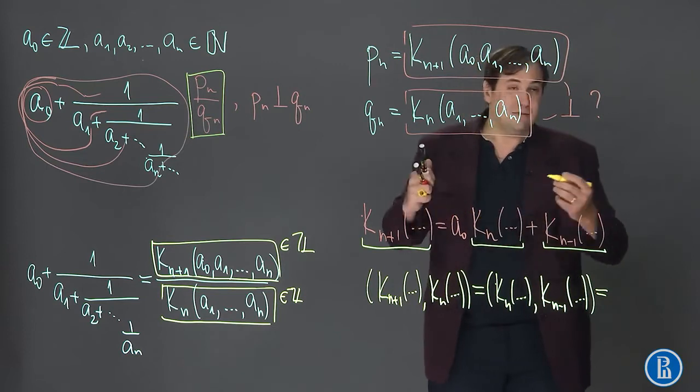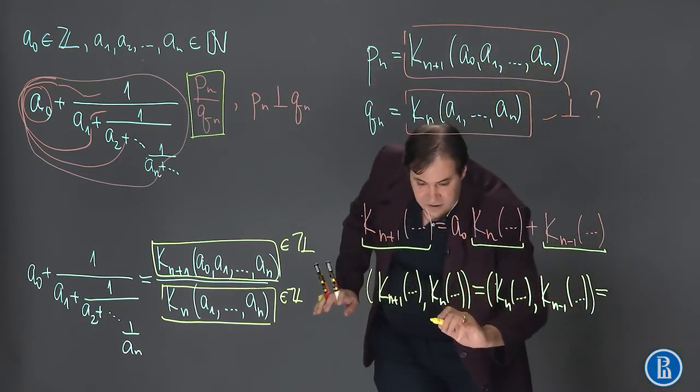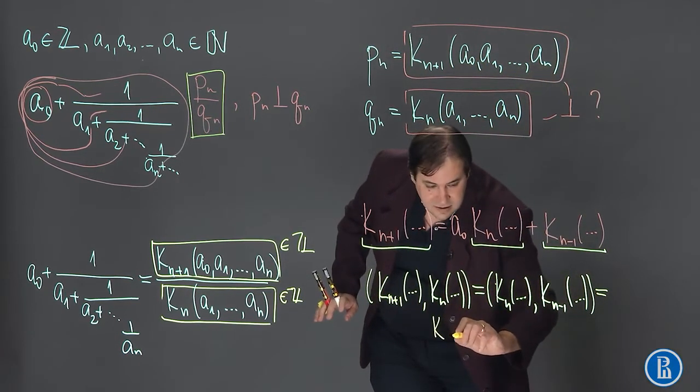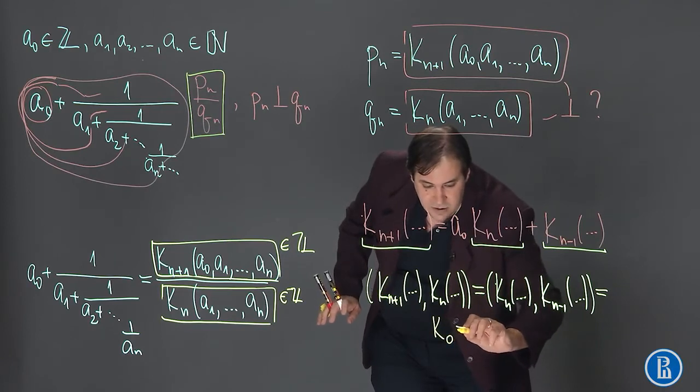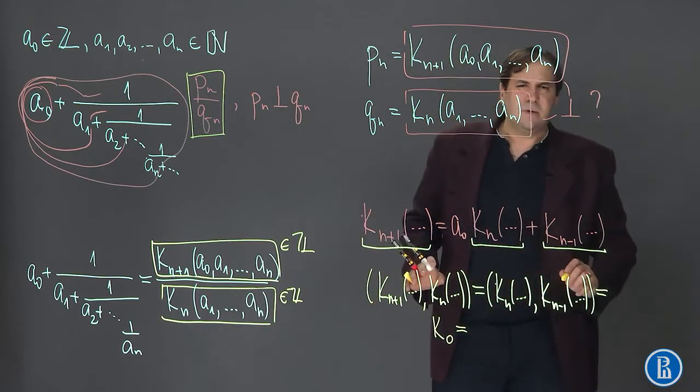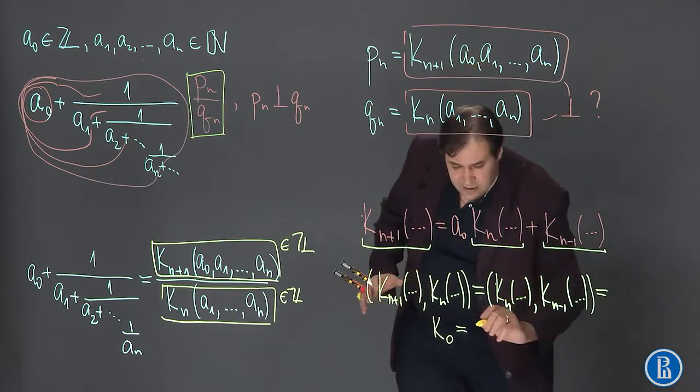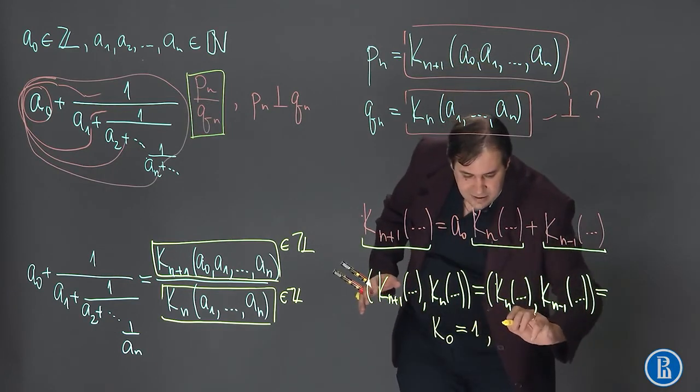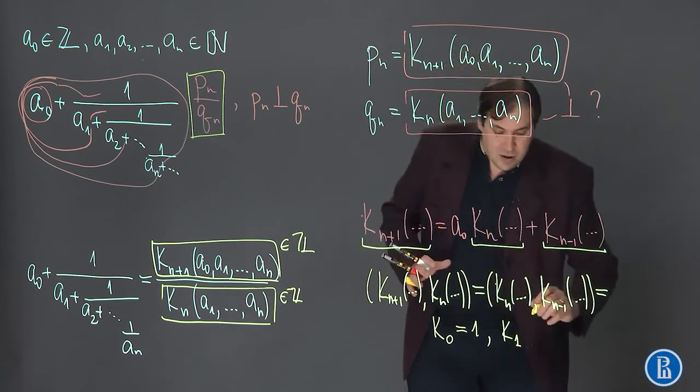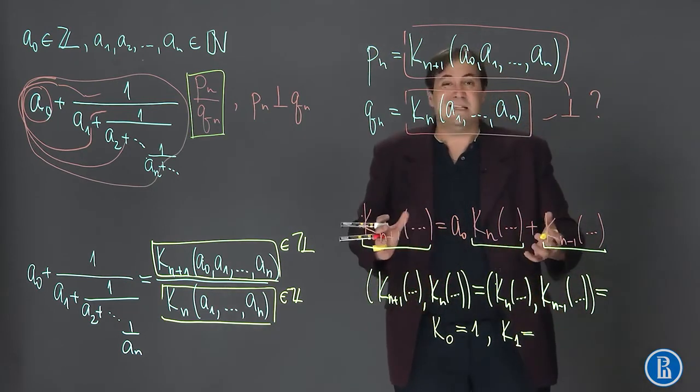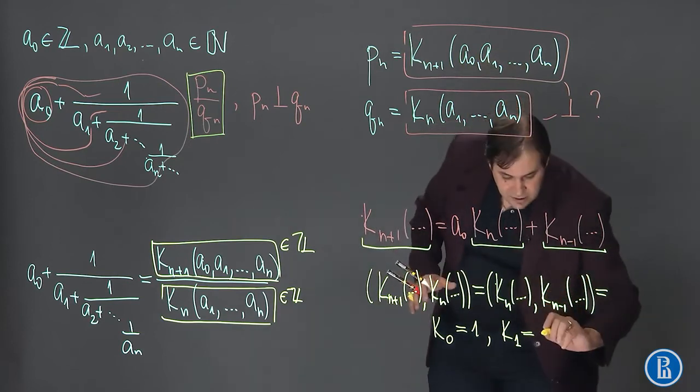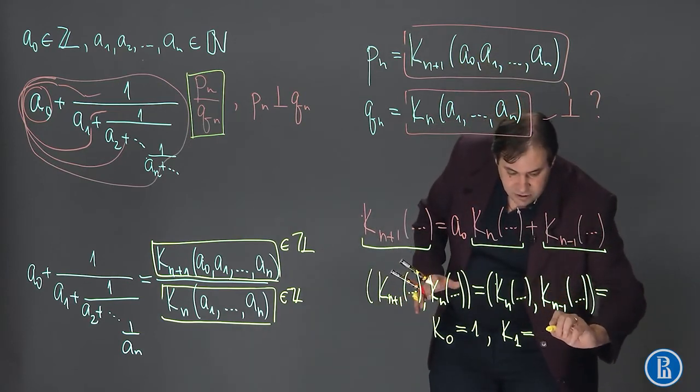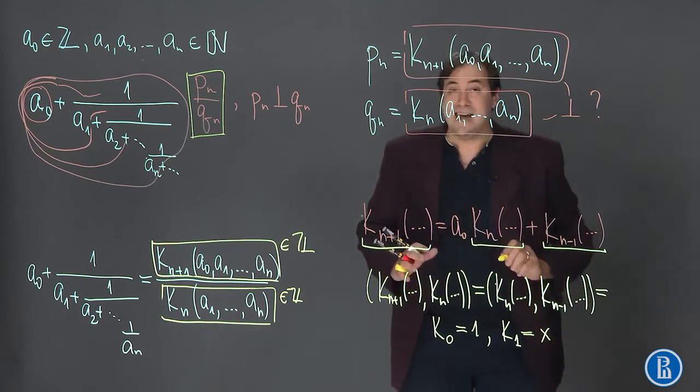But the first two Continuants, let's recall, the first one is K0 and K0 is simply equal to 1. So it's some integer, let's say x, but they are certainly mutually prime.